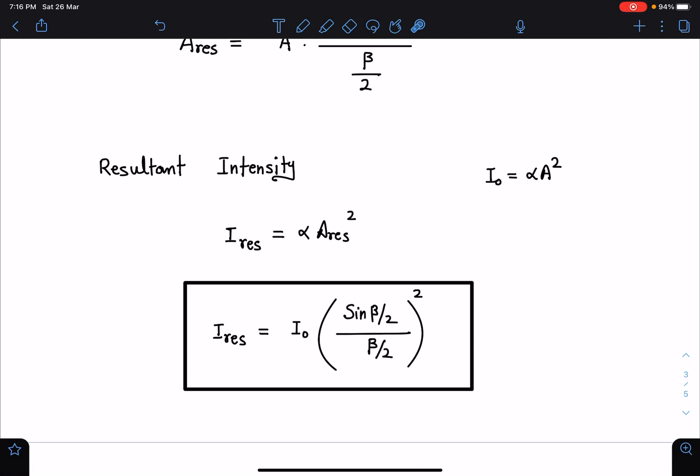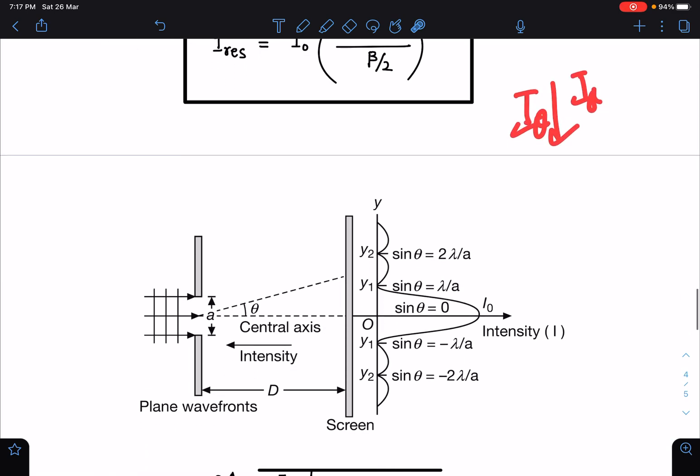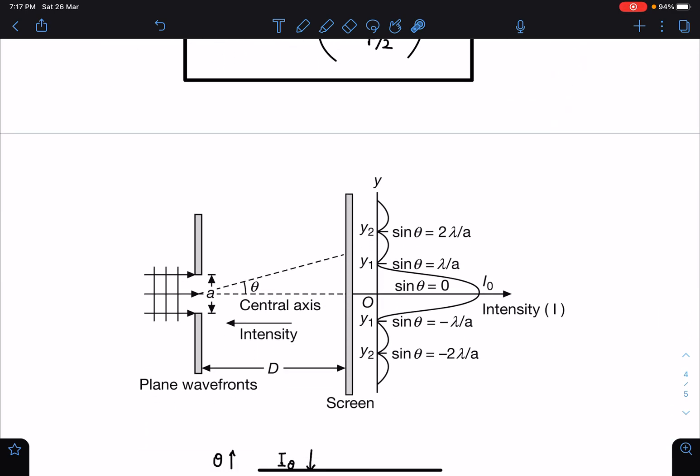And we can see here as theta increases, this I_theta decreases and in fact it decreases drastically. Here is the intensity variation you can say. The maximum intensity is directly in front of this and as we are moving it is decreasing rapidly.